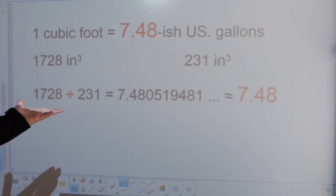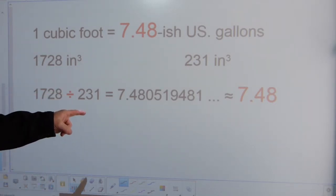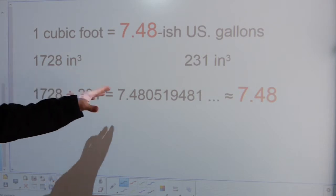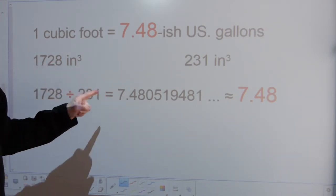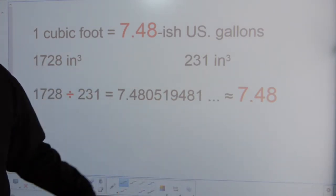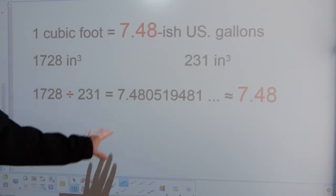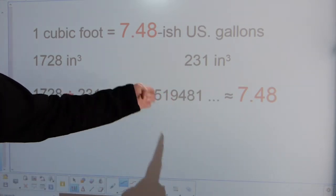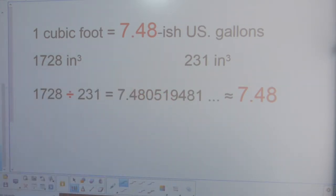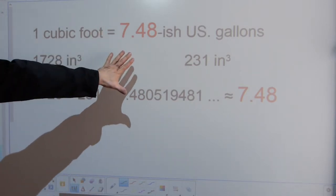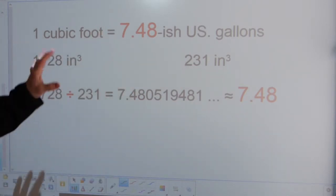If you divide the bigger number by the smaller number, not the other way around, you are going to get this number 7.48 plus decimal digits, whatever on the calculator's display, which is typically just rounded or truncated to 7.48.